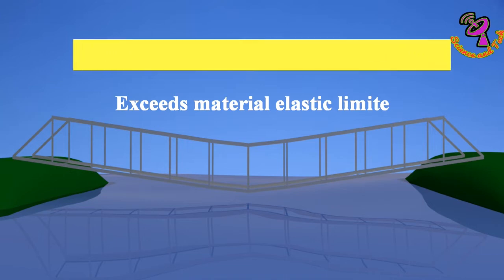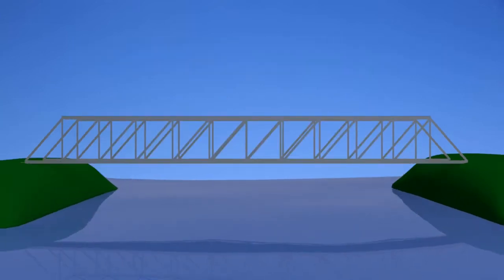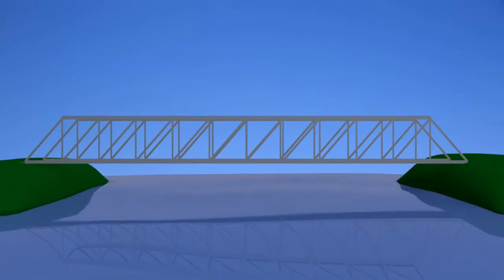If the bending moment exceeds the material's elastic limit, it will cause a break. Truss is used to avoid bending moment and to maintain stabilization.